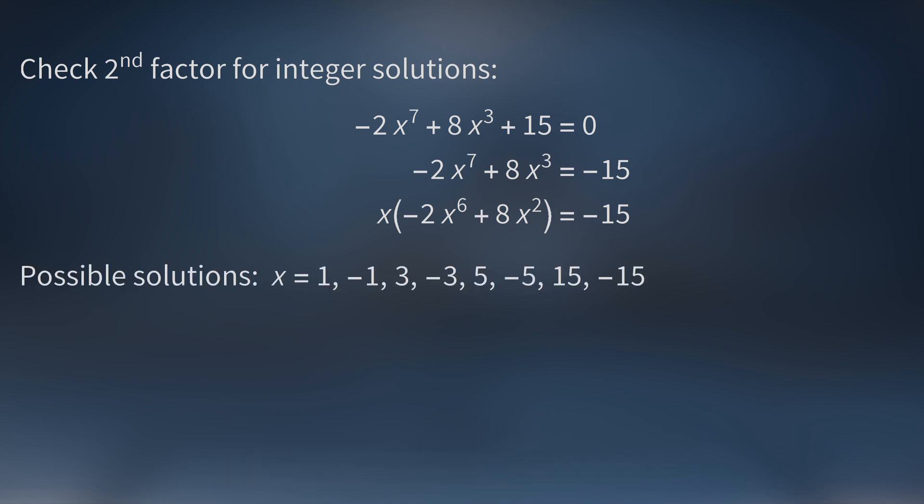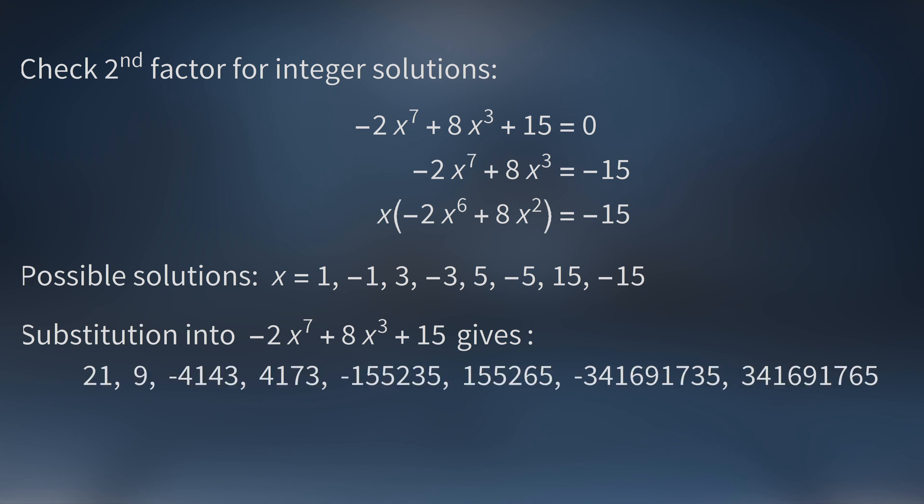Here's a list of all possible solutions. They are all the positive and negative integers that divide negative 15 evenly. If we plug these numbers into the factor negative 2x to the seventh plus 8x cubed plus 15, we get these eight values. None of them are zero, so we're done. The only solution to the original Diophantine equation is x equals zero.